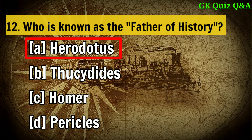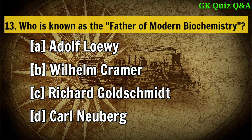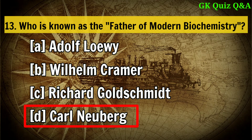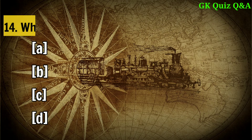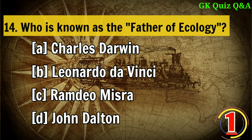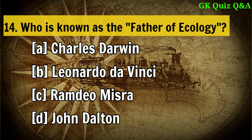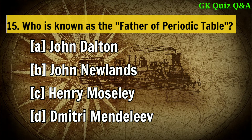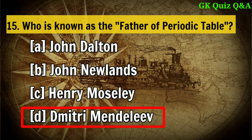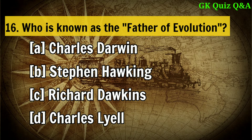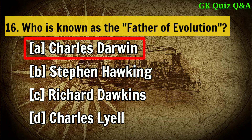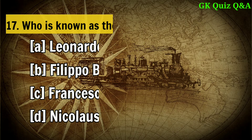Who is known as the father of history? Answer A: Herodotus. Who is known as the father of modern biochemistry? Answer D: Carl Neuburg. Who is known as the father of ecology? Answer C: Ramdeo Misra. Who is known as the father of the periodic table? Answer D: Dimitri Mendeleev. Who is known as the father of evolution? Answer A: Charles Darwin.